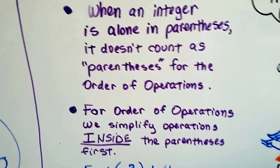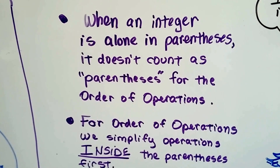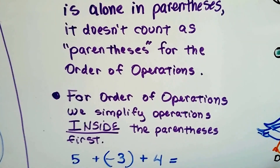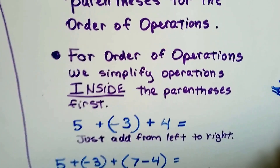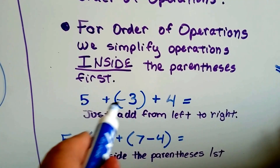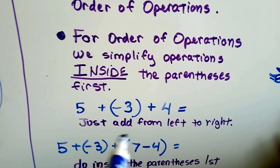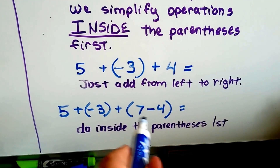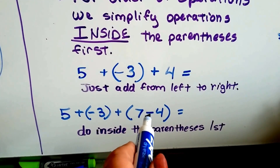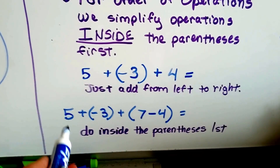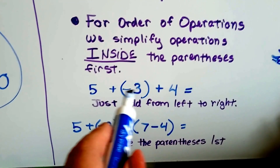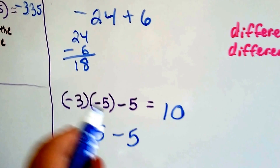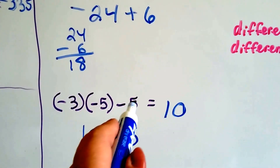One last thing to show you quickly. When an integer is alone in parentheses, it doesn't count as parentheses for the order of operations. For the order of operations, we simplify the operations inside the parentheses first — that's what they mean by doing parentheses first. So if you see something like 5 plus negative 3 plus 4, that's not what they're talking about. They're talking about when there's actually an operation — like multiplication, addition, subtraction, or division — inside of the parentheses. That is what you do first, then the addition and subtraction. But if you see it back-to-back in parentheses with multiplication implied, then it gets done first before subtraction.